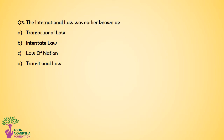Question number 3. International law was earlier known as Option A: Transactional law. Option B: Interstate law. Option C: Law of Nations. Option D: Transitional law. The correct answer for this question is Option C — Law of Nations.